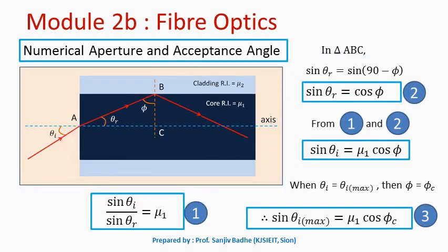The light ray enters from air into the core, so we apply Snell's law: sin(theta_i) / sin(theta_r) = mu_1 / 1, since 1 is the refractive index of air, giving sin(theta_i) / sin(theta_r) = mu_1. Looking at triangle ACB, angle C is 90 degrees, so theta_r = 90° − phi. Therefore sin(theta_r) = sin(90° − phi) = cos(phi). Calling this equation 2, from equations 1 and 2 we get sin(theta_i) = mu_1 · sin(theta_r) = mu_1 · cos(phi).